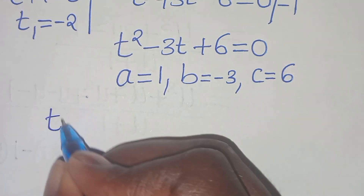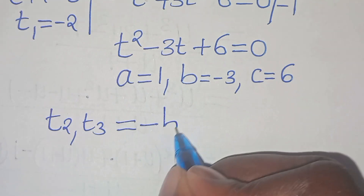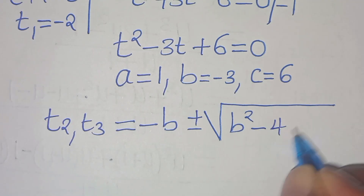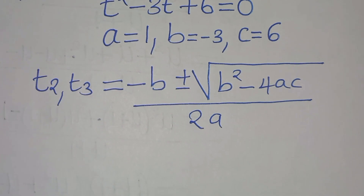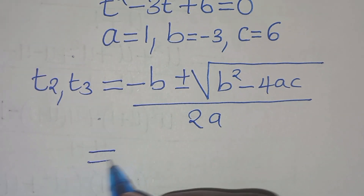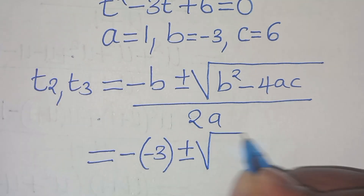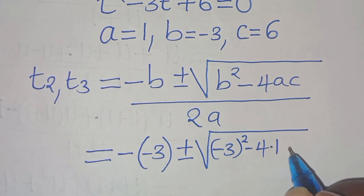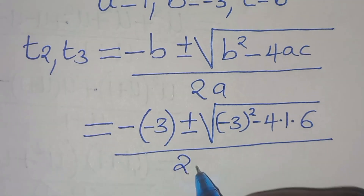We solve for t₂ and t₃ using the quadratic formula: t equals minus b plus or minus the square root of b squared minus 4ac, all divided by 2a. Substituting the values of a, b, and c, we have minus of minus 3 plus or minus the square root of minus 3 squared minus 4 times 1 times 6, divided by 2 times 1.